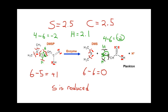Now let's look at the second carbon in DMSP. Using the bond cutting method, I can see it has a carbon-carbon bond, another carbon-carbon bond, and two carbon-hydrogen bonds. The four electrons from the two carbon-hydrogen bonds are formally assigned to the carbon, giving a total of 6 electrons. So this carbon has a 4 minus 6, or minus 2 oxidation state.